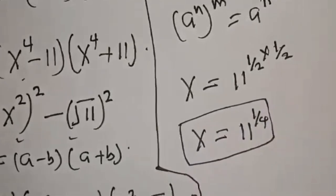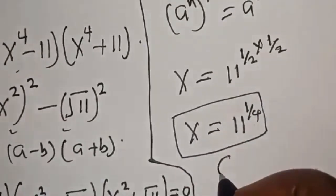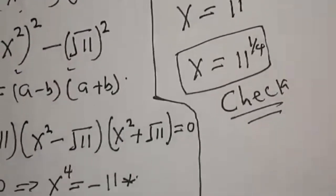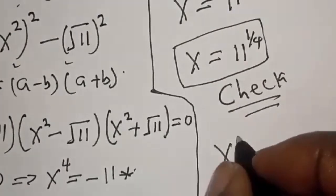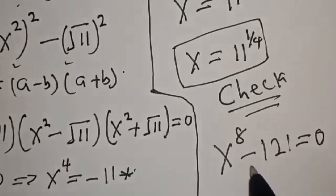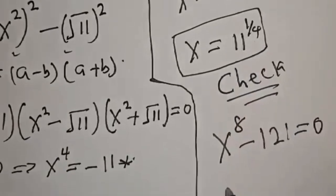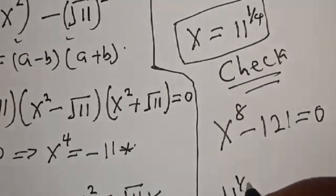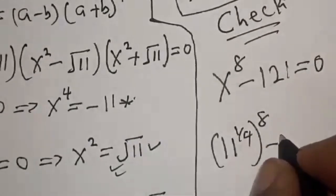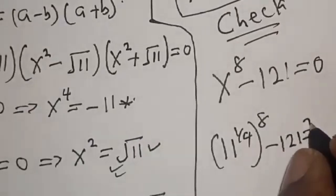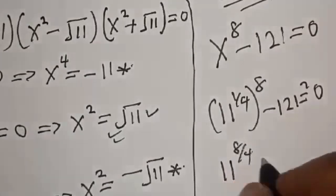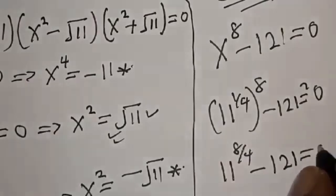We can check to confirm if our answer is right or wrong. Check: the given equation is s raised to power 8 minus 121 equals 0, at s equal to 11 raised to power 1 over 4. Substituting: 11 raised to power 1 over 4, raised to power 8, minus 121 must equal 0. That gives 11 raised to power 8 over 4, minus 121, must equal 0.